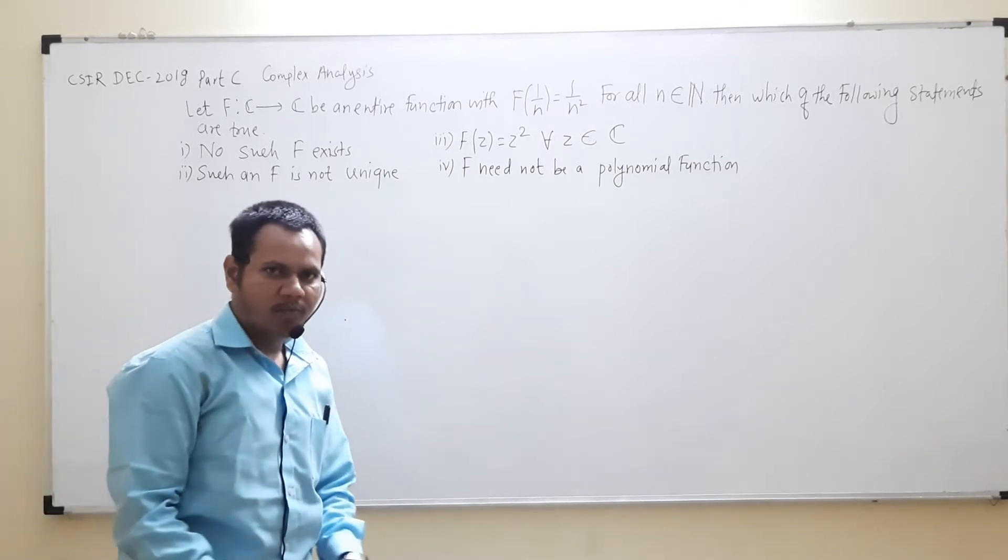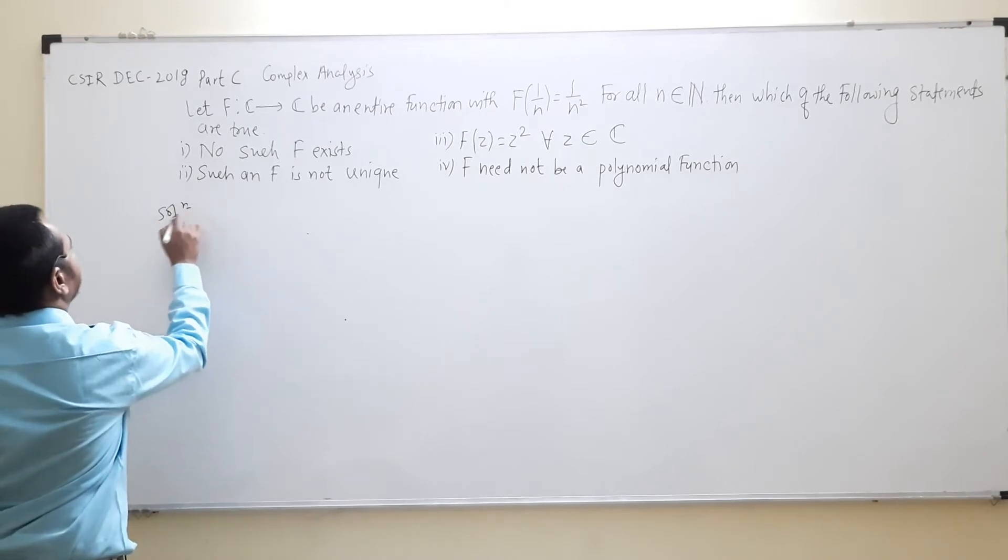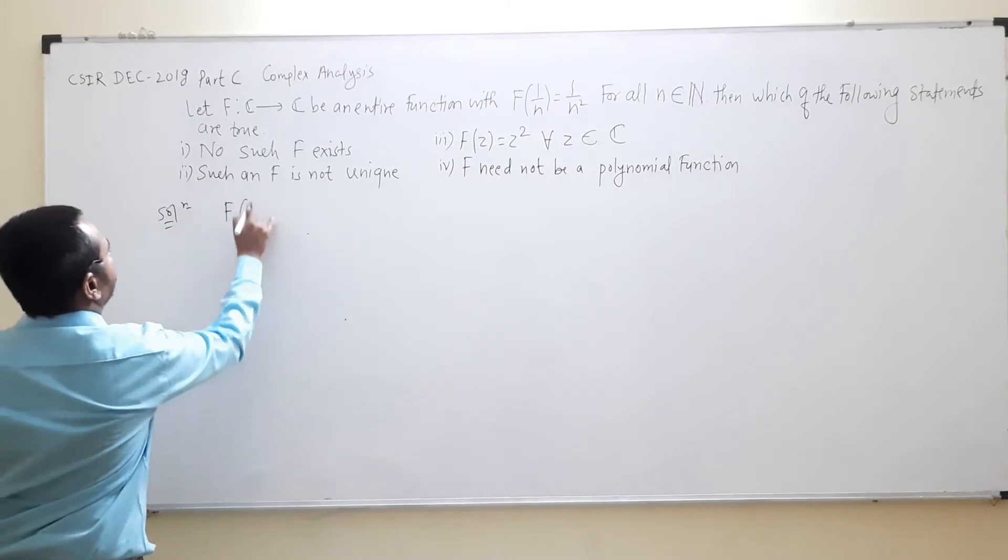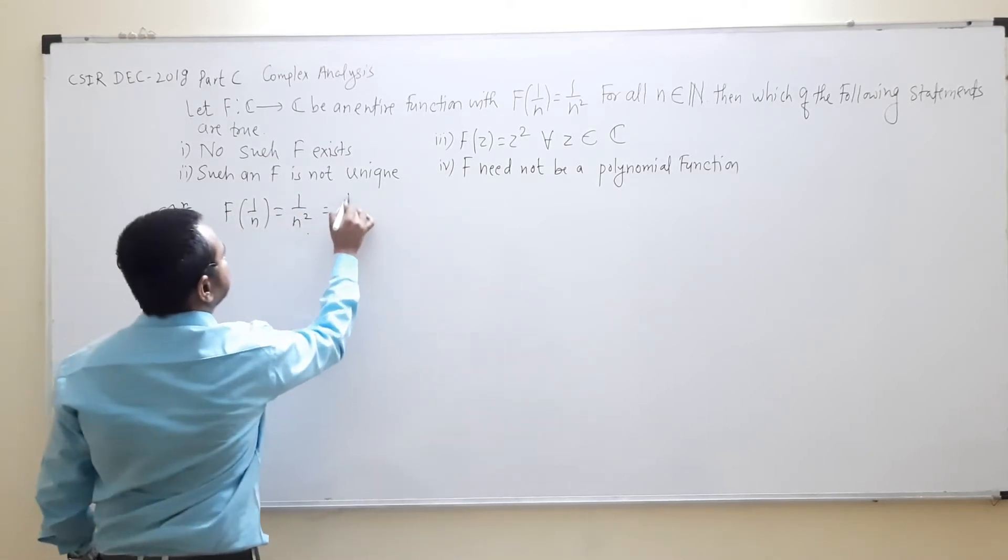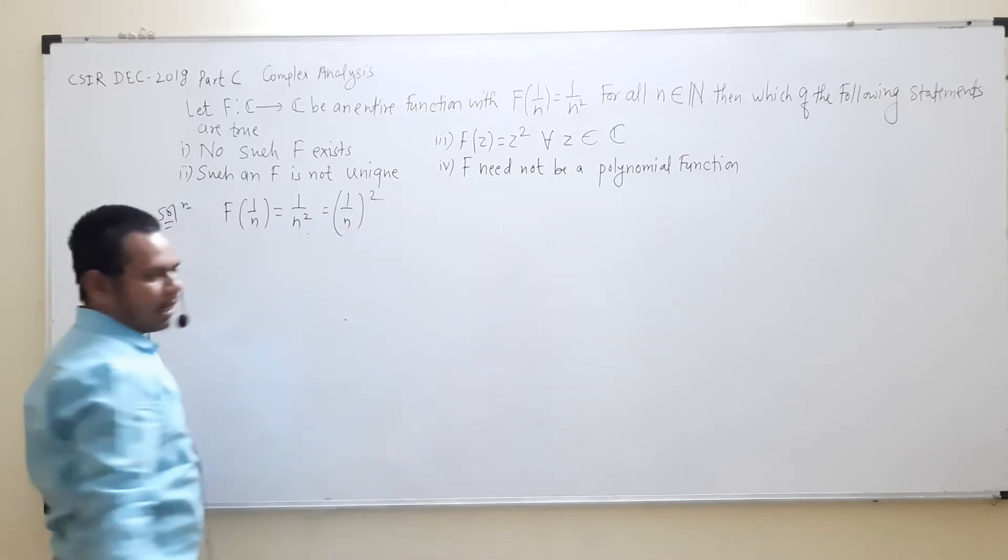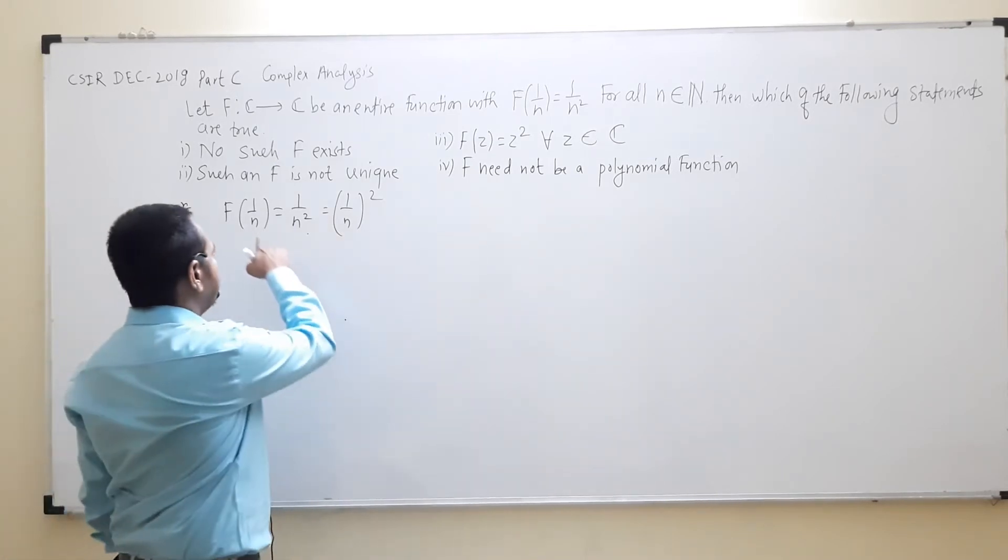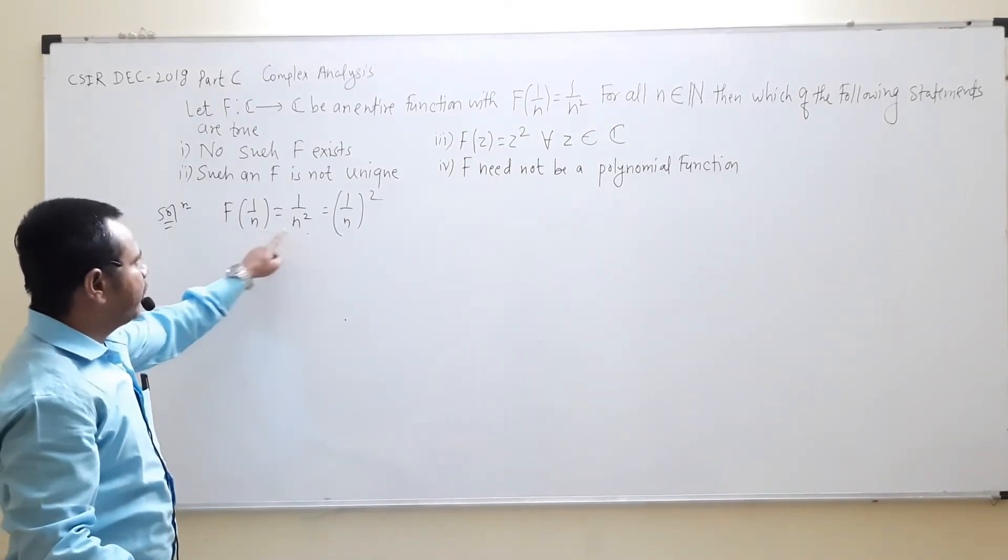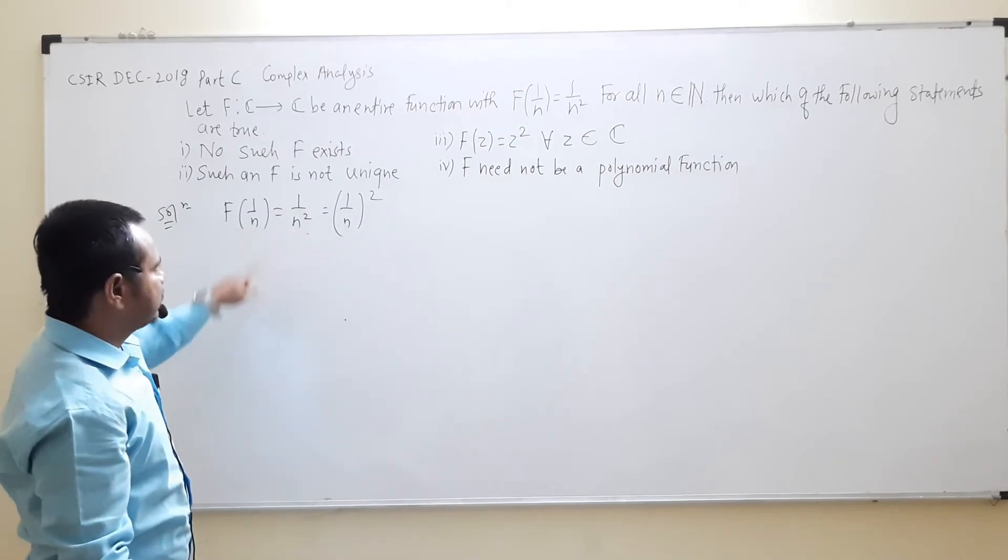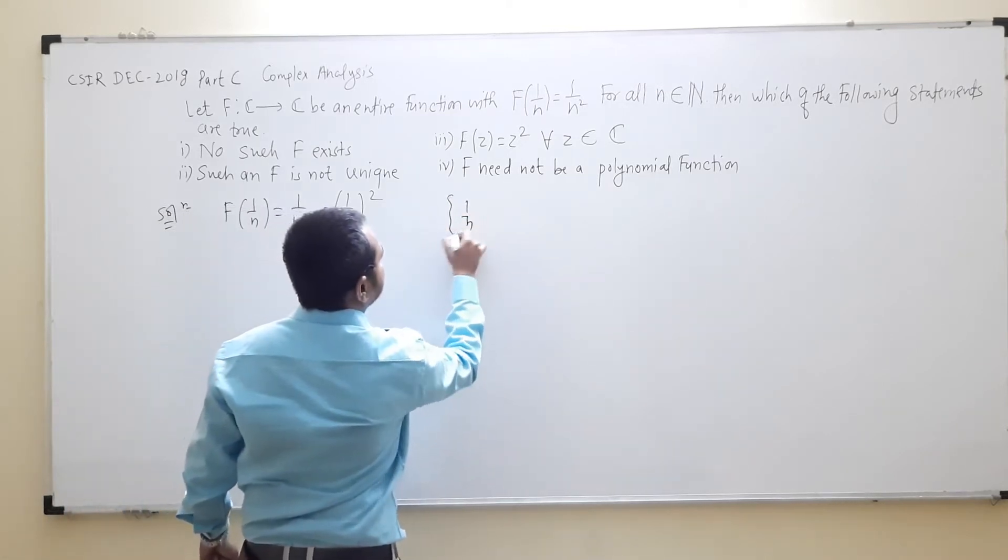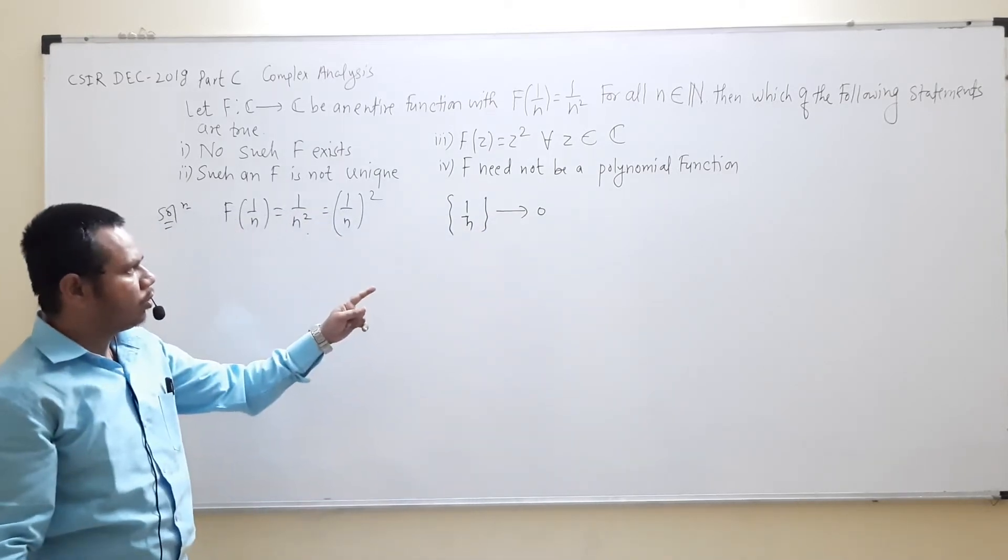Given that f(1/n) maps to 1/n², we can write it as (1/n)². Now this set {1/n} has limit point as 0. This sequence converges to 0.